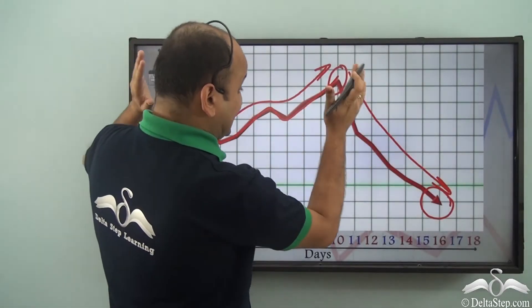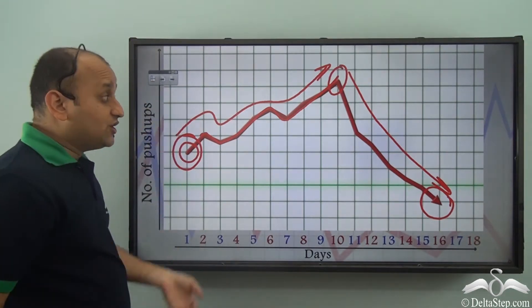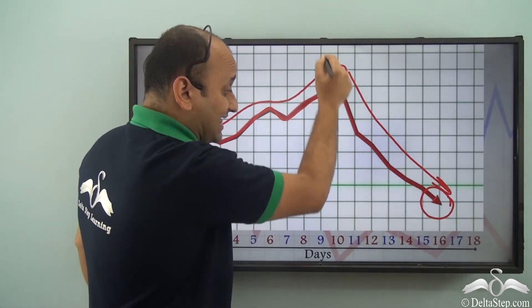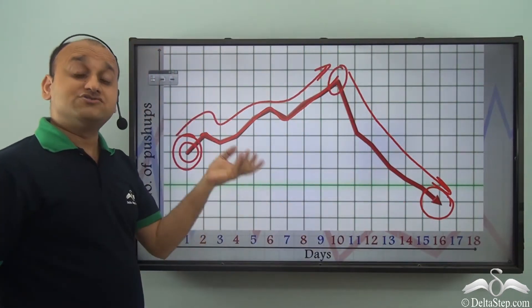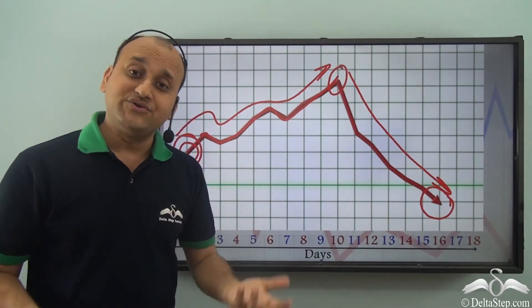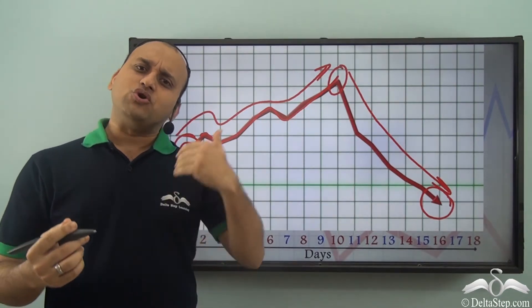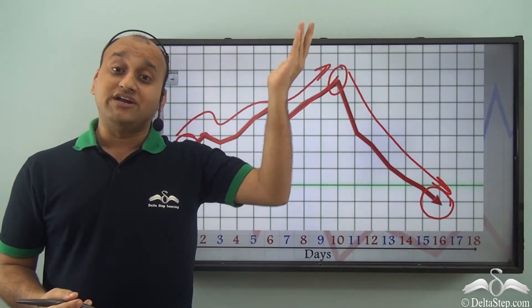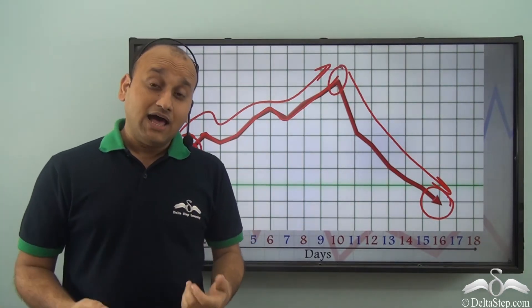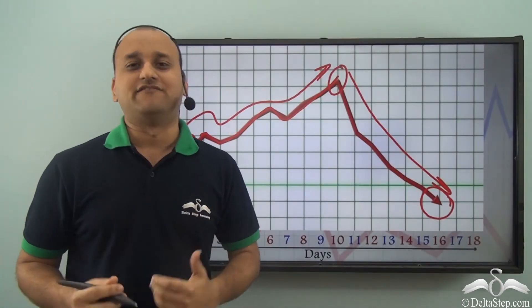Just from this graph, without any actual number of push-ups, you were able to identify how his performance improved and then declined — all because you had a line graph. A line graph helps you identify a trend, whether it is improvement or decline over time. So whenever you have such data, you can use a line graph and represent the data visually in a much better way.